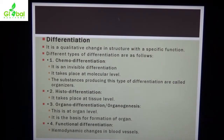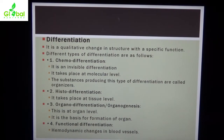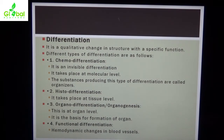Different types of differentiation are as follows. First is chemo-differentiation — it is an invisible differentiation that takes place at the molecular level. The substances producing this type of differentiation are called organizers. Second type is histo-differentiation, which takes place at the tissue level. Third type is organo-differentiation, also called organogenesis — organ banane ka kaam — this is at the organ level and is the basis for formation of organs.